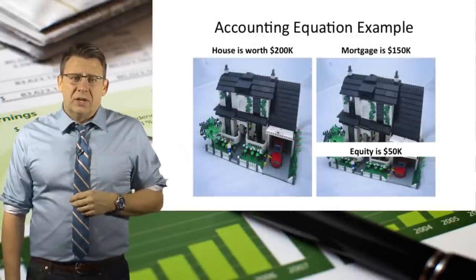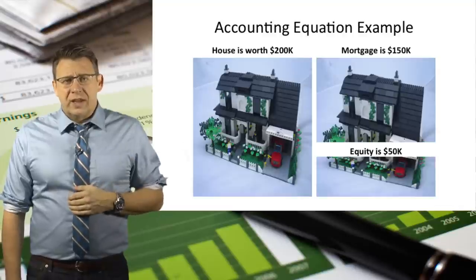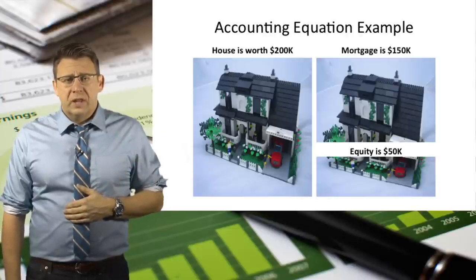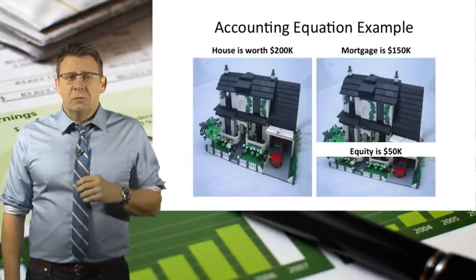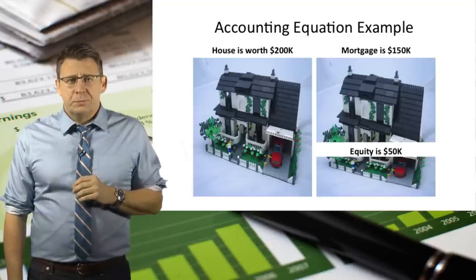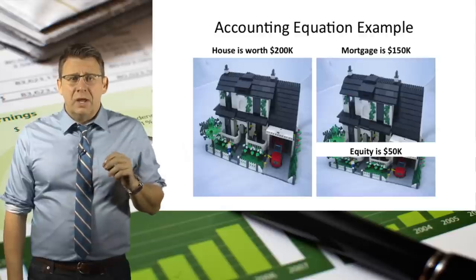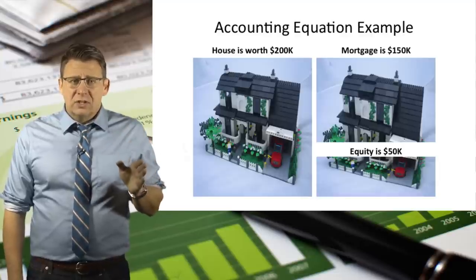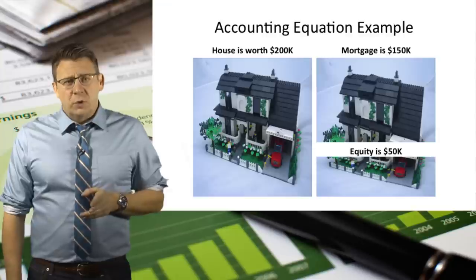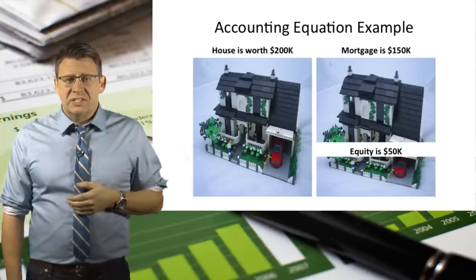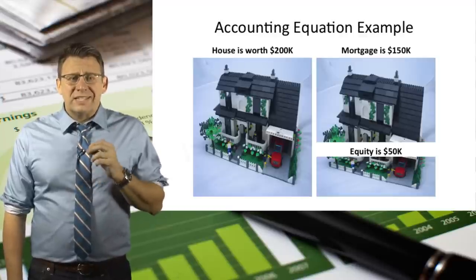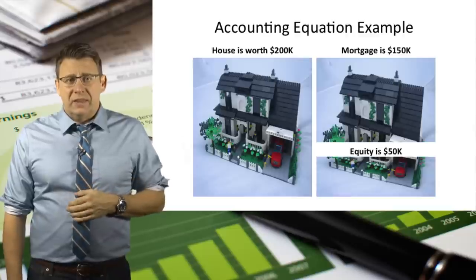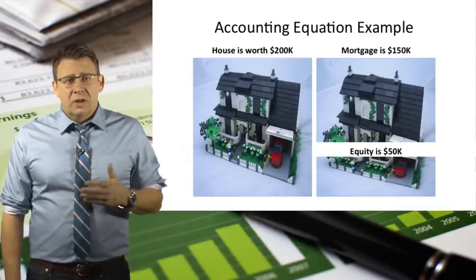Now let's look at a basic example of the accounting equation. Let's say a house is worth $200,000. A house is an asset because it has value and will provide benefit into the future. However, there's also a home loan called a mortgage — let's say that amount is $150,000. A mortgage is a liability because it's a claim against the asset from an outside party, which in this case is a bank. It's important to note that a house and a home mortgage are two different things. The accounting equation is not in balance because $200,000 does not equal $150,000. The remainder is equity — the owner has $50,000 of equity in the home. Equity represents the owner's claim on the asset. And that concludes this brief overview of the accounting equation.